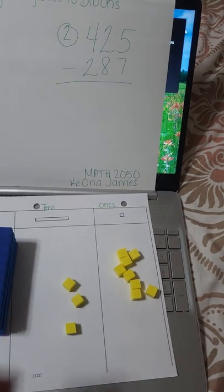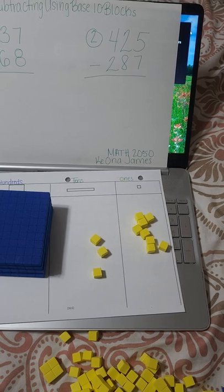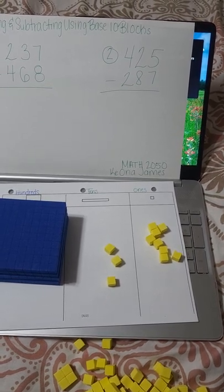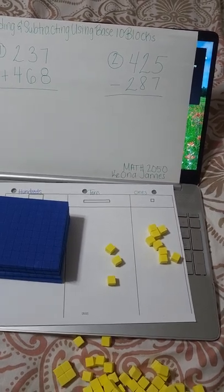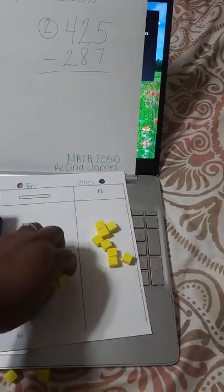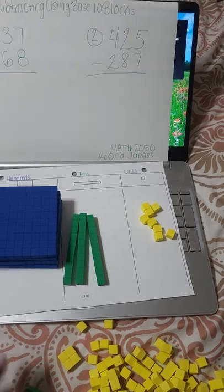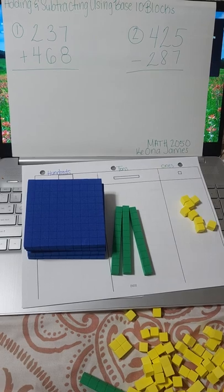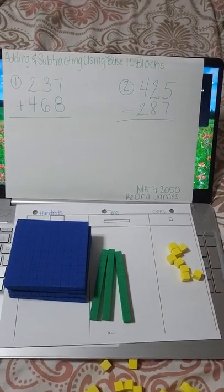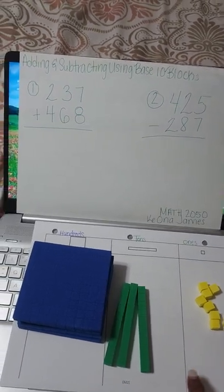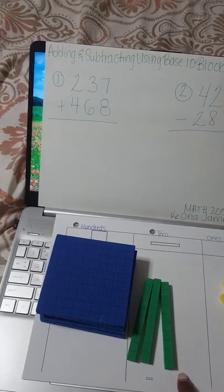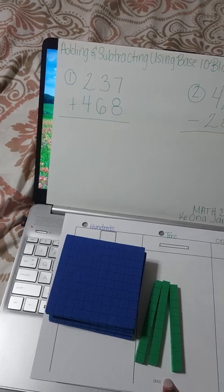Eleven minus eight is three. That is the value of the three, because we borrowed and made the two a one — we did fifteen minus seven which gave us our eight, and two minus eight we had to borrow that one, so that gave us one minus eight. We also had to borrow another one from our hundreds place, and that gave us eleven minus eight, which gave us three.